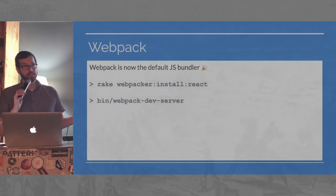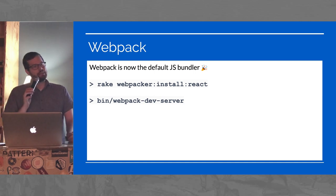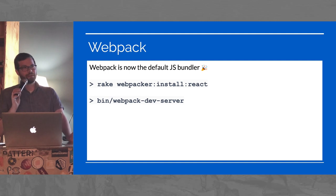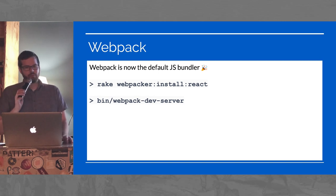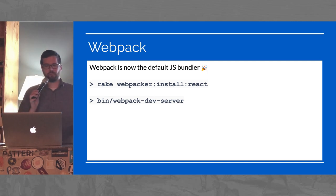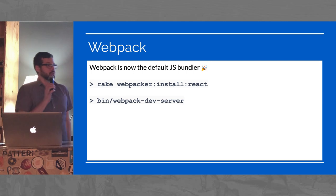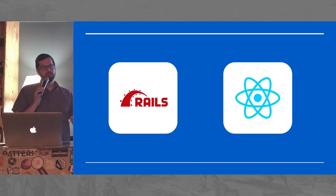Webpack is now the default JS bundler. If you've ever dealt with Webpack config before, it is a pain. The fact that they were able to do it seamlessly is super exciting. There are a bunch of rake tasks — we'll see the React one tonight, but there are Angular, Copy, Elm, ERB, React, Stimulus, TypeScript, and Vue. Webpacker install React sets everything up for you. Rails 6 has been deemed kind of a minor major update — lots of neat things but nothing crazy breaking.